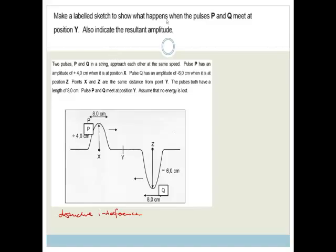Next question. It says make a labeled sketch to show what happens when pulses P and Q meet at position Y. Also indicate the resultant amplitude. So as they come towards each other, what is going to happen? P and Q are going to overlap and you're going to end up with a resultant pulse which is down.